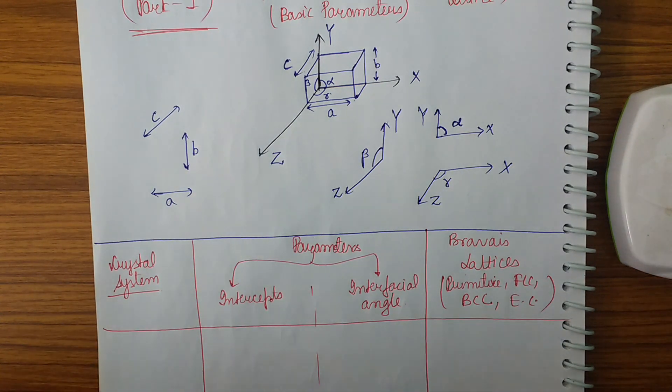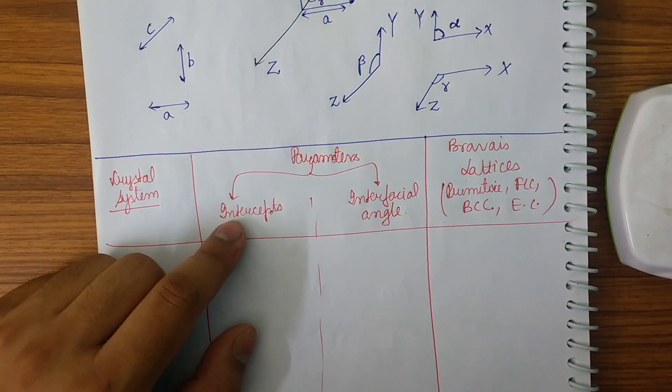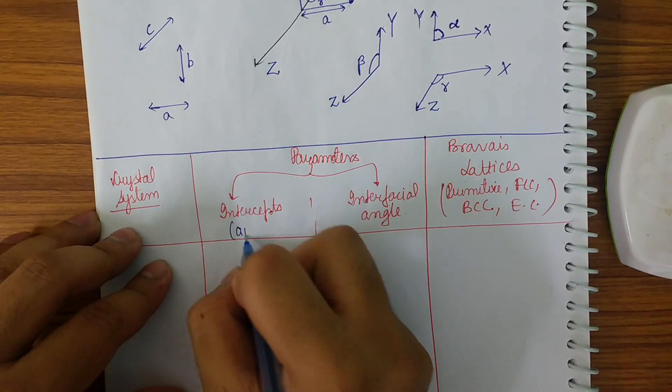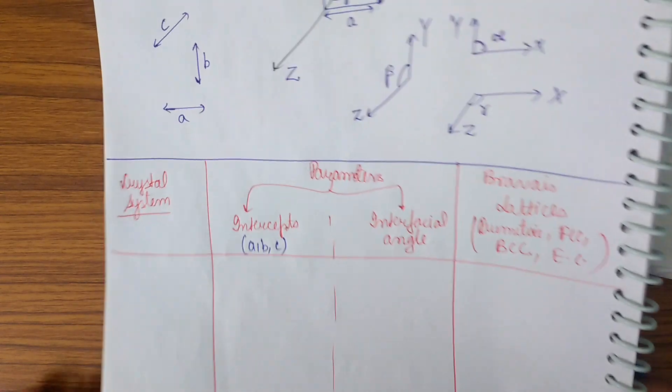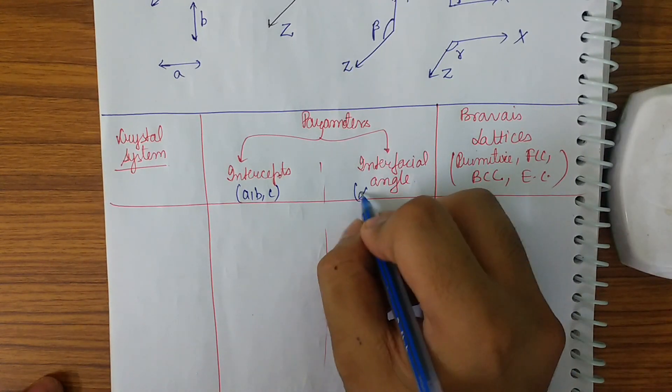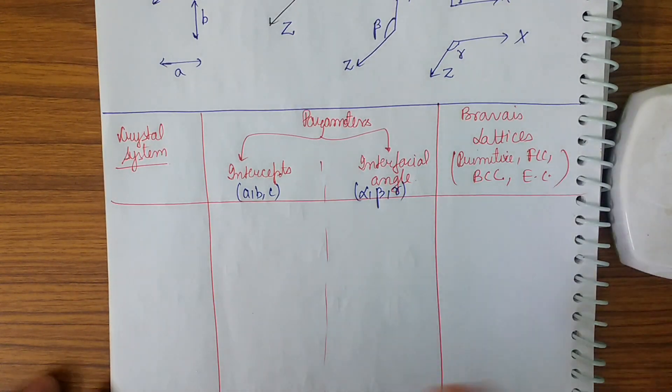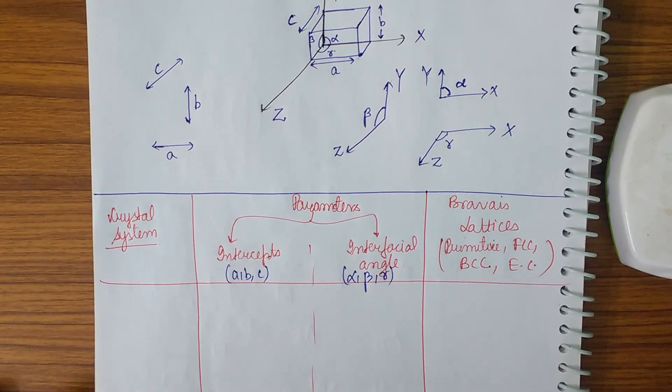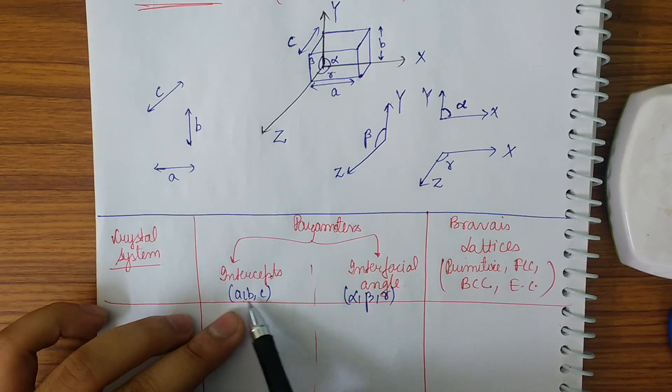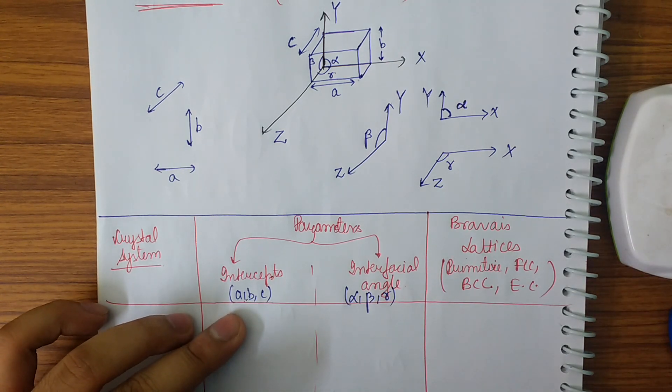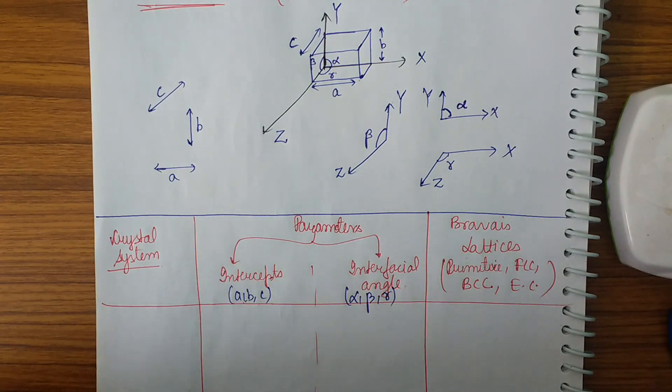Basically how many parameters can I have? Three of intercepts which are a, b, and c, and how many parameters of angle can I have? Three parameters: alpha, beta, and gamma. How many parameters of intercepts I have? One, two, three. And for interfacial angle I have three angles.